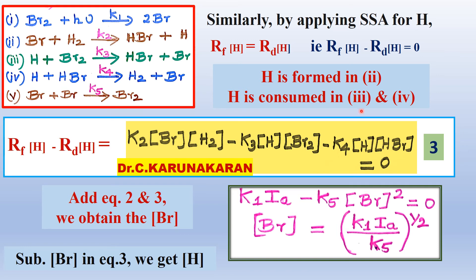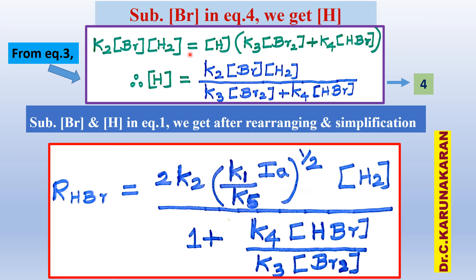Now let us add equations 2 and 3. Several terms cancel, and it is simplified to: k₁Iₐ − k₅[Br]² = 0. Therefore, the concentration of Br is obtained as [Br] = (k₁Iₐ/k₅)^(1/2). From equation 3, taking [H] as common, we get the concentration of hydrogen atoms: [H] = k₂[Br][H₂] / (k₃[Br₂] + k₄[HBr]).